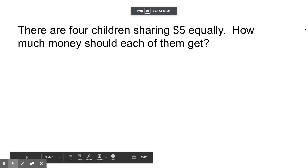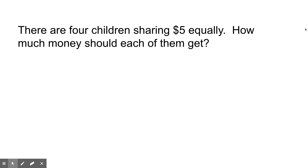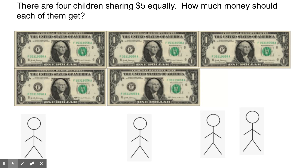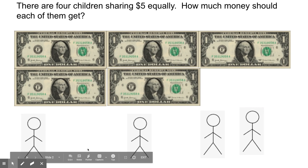There are four children sharing five dollars equally. How much money should each of them get? I'm going to use pictures to help me solve this today. I see five dollars and four children.